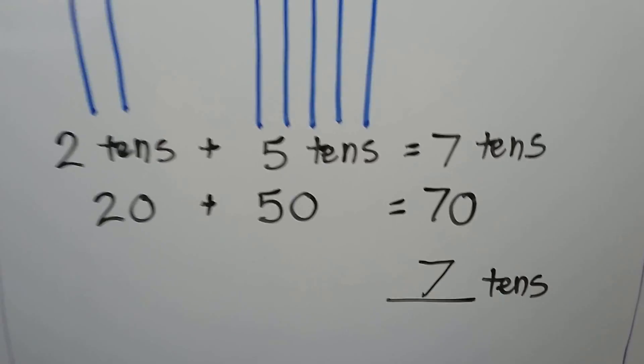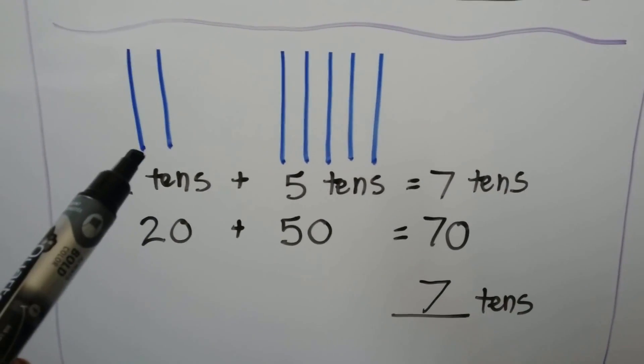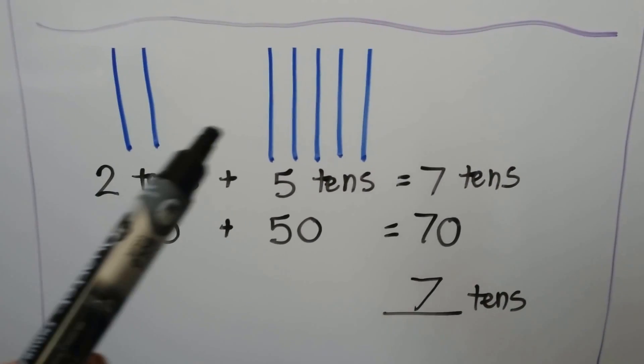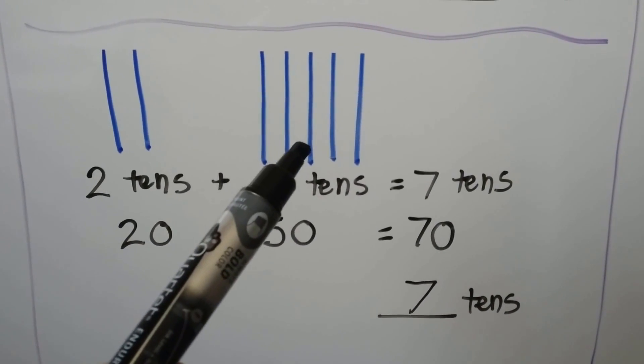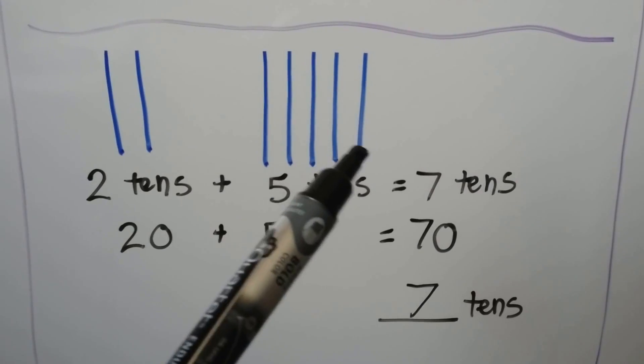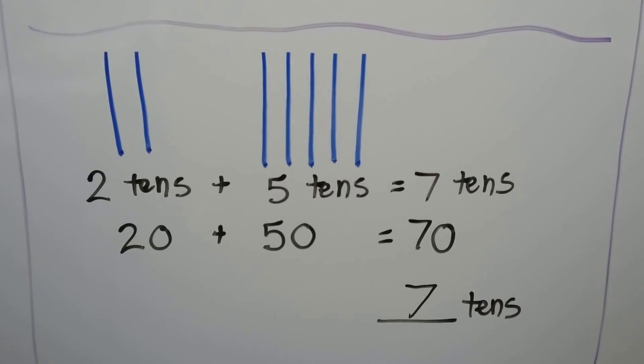We can count by tens: ten, twenty, thirty, forty, fifty, sixty, seventy.